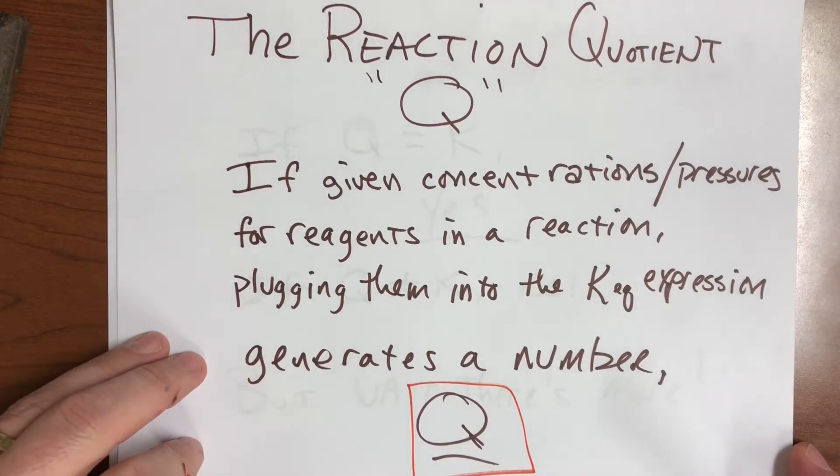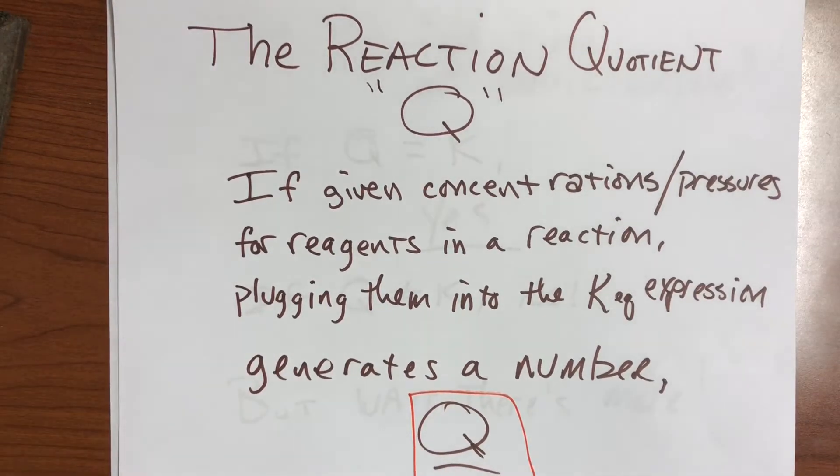Keep in mind that not all reactions are at equilibrium. You might have a reaction that is reversible and can go back and forth, but it hasn't yet reached equilibrium. This is what we use the reaction quotient for.